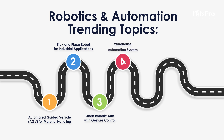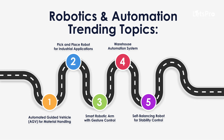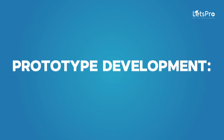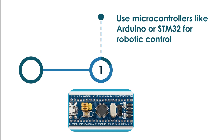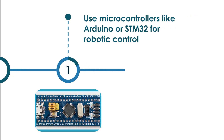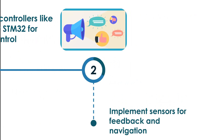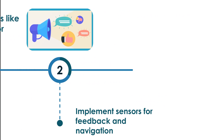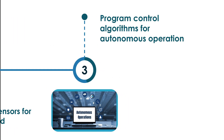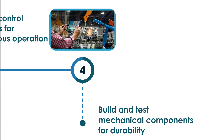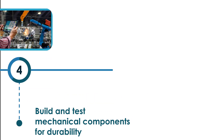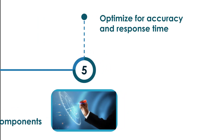Prototype Development: Use microcontrollers like Arduino or STM32 for robotic control. Implement sensors for feedback and navigation. Program control algorithms for autonomous operation. Build and test mechanical components for durability. Optimize for accuracy and response time.